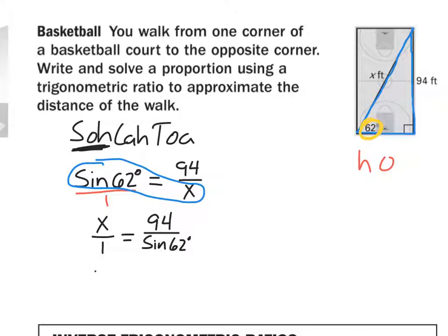So we take our calculators, and we type in 94 divided by sine of 62 degrees. And let's round this to the nearest foot as well, since the last problem was rounded to the nearest foot. So X is then approximately 106 feet, rounding to the nearest foot.